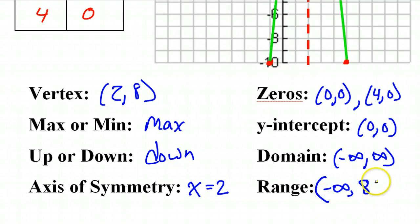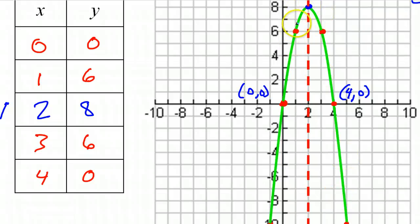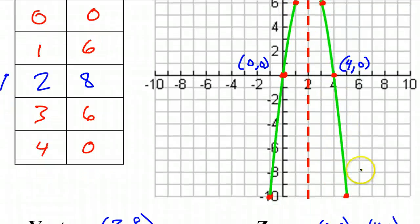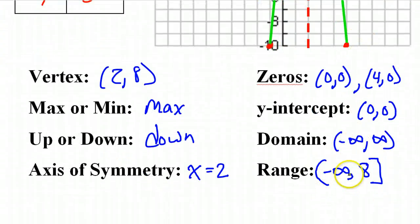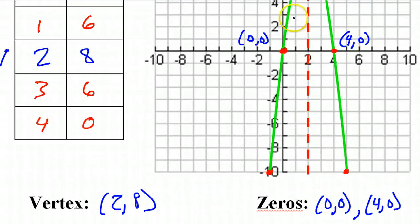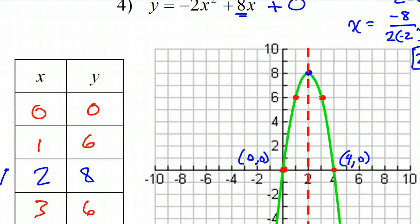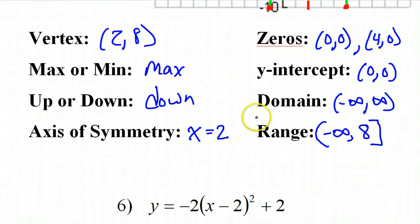Infinity always gets the round parentheses, and this 8 is going to get the square bracket to show that 8 is included — the parabola touches 8, it reaches 8. By the way, you have to give me this range in order from bottom to top. Both domain and range are always given from least to greatest, so it's got to be negative infinity to 8, not the other way around. I think that's all we needed for problem number 4.